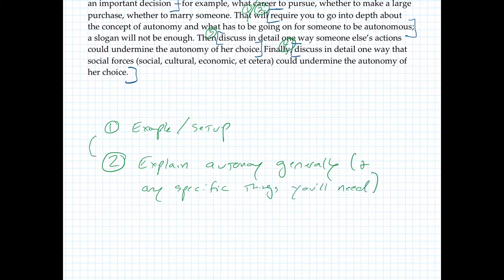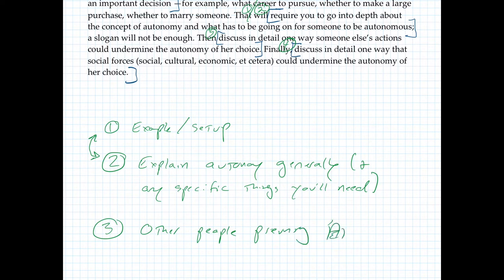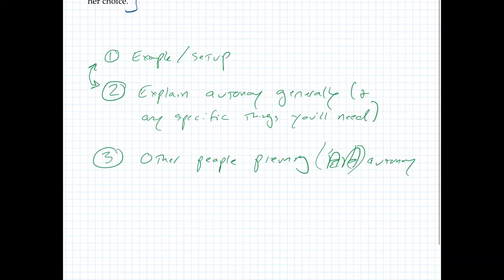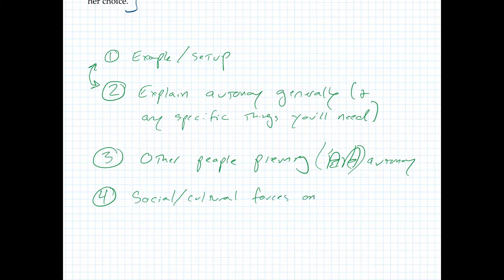These two — example setup and general autonomy — can be done in either order, depending on how you want to approach it. Then you've got other people preventing autonomy, and social and cultural forces on autonomy.